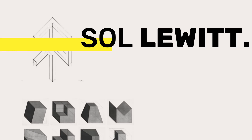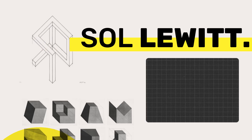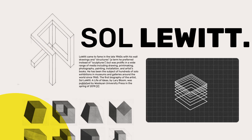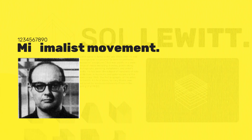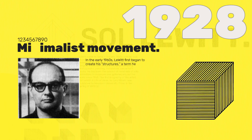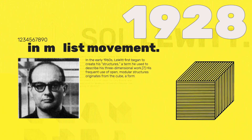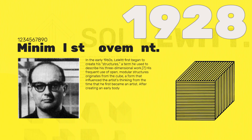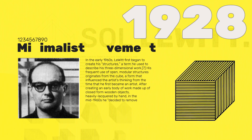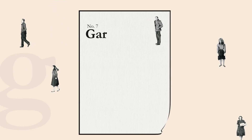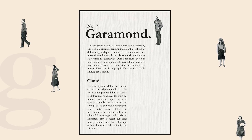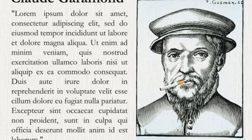Rubik is a sans serif typeface designed by Philip Hubert and Sebastian Fisher of Hubert & Fisher, a design studio based in Berlin and New York. The typeface was commissioned by Google for a Rubik's Cube edition — hence the name. The design features stout proportions with rounded corners and low stroke contrast. The entire family, with seven weights and matching italics, is open source and available for free on Google Fonts.